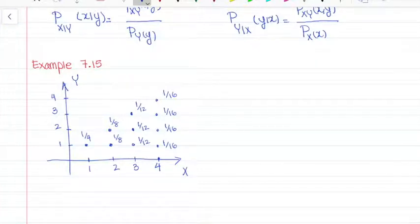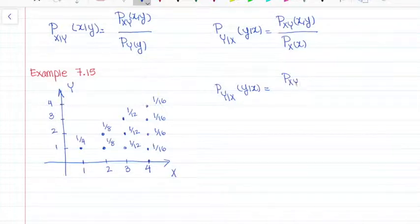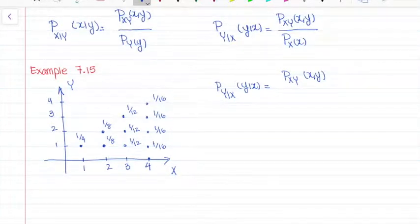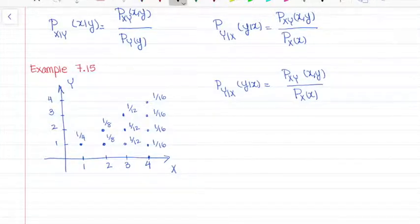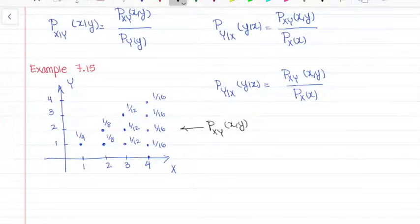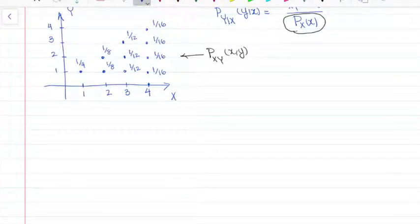The question asks us to find the conditional probability P_{Y|X}(y|x). We know that P_{Y|X}(y|x) equals the joint PMF P_{XY}(x,y) divided by P_X(x) — because it is given X, so we divide by P_X(x). What I have available is P_{XY}(x,y) from the graph, so what I need to find first is P_X(x), the marginal PMF of X.